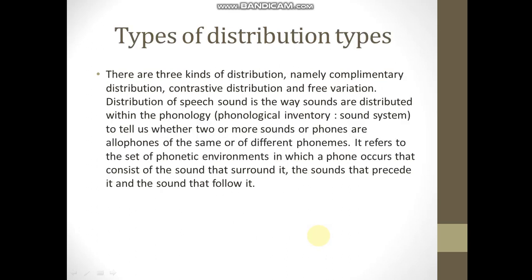There are three kinds of distribution: complementary distribution, contrastive distribution, and free variation. Distribution of speech sounds refers to the way sounds are distributed within the phonological inventory to tell us whether two or more phones are allophones of the same phoneme or of different phonemes. It refers to the set of phonetic environments in which a phone occurs — the sounds that surround it, precede it, and follow it.